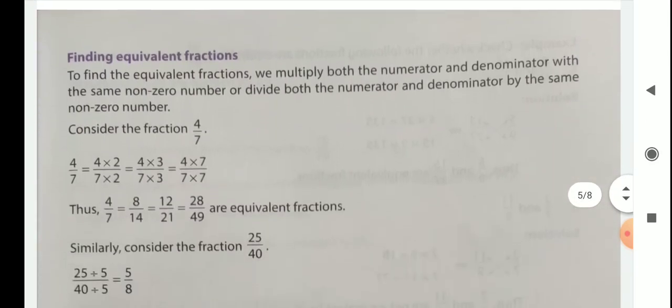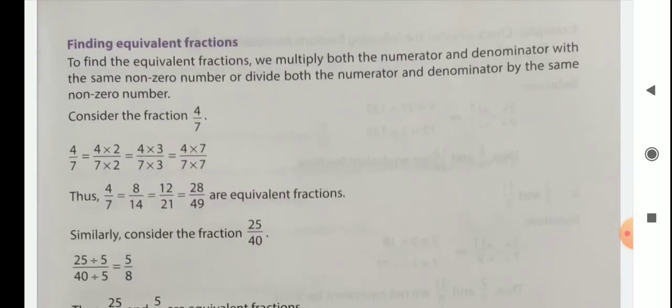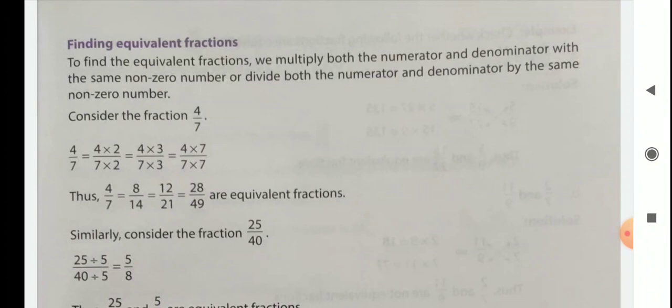Finding equivalent fractions — how do we get them? To find equivalent fractions, we multiply both the numerator and denominator by the same non-zero number, or divide both the numerator and denominator by the same non-zero number. So we can get equivalent fractions by both multiplication and division. First we discuss multiplication.